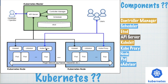The main components on the Kubernetes master are: the controller manager, the scheduler, etcd, and the API server. All of these are installed on the Kubernetes master node. This is the default architecture.